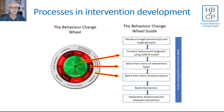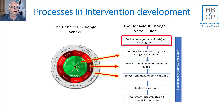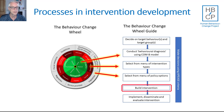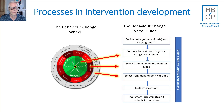The Behaviour Change Wheel links to the Behaviour Change Wheel guide by allowing you to implement three of the parts within that guide. But before you can even get started, you have to make a decision about what behaviours and whose behaviours you're going to target. Then, once you've applied the wheel to identify your intervention types and policy options, you have to build the intervention — turning the behaviour change strategy into a fully fledged intervention. And then, of course, you have to implement it and disseminate and evaluate it.